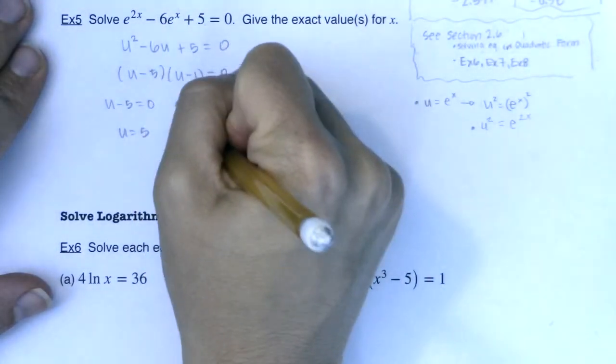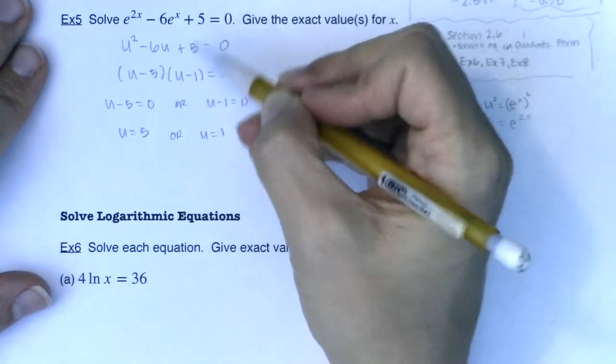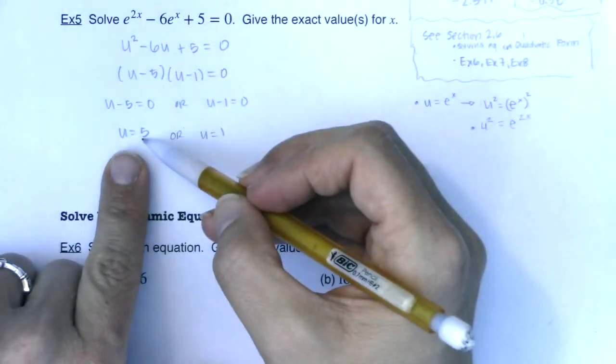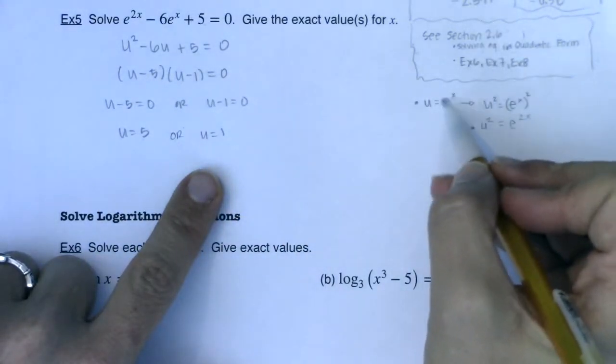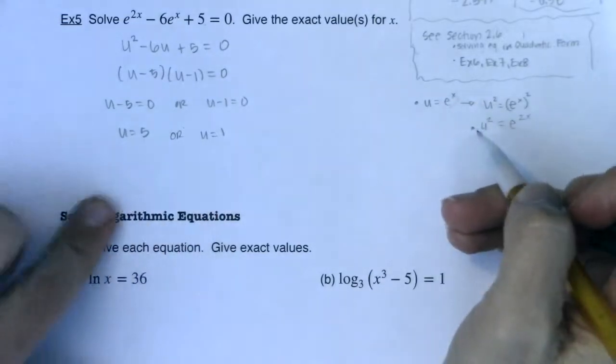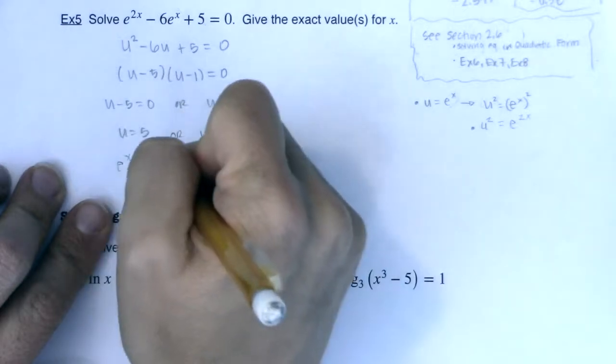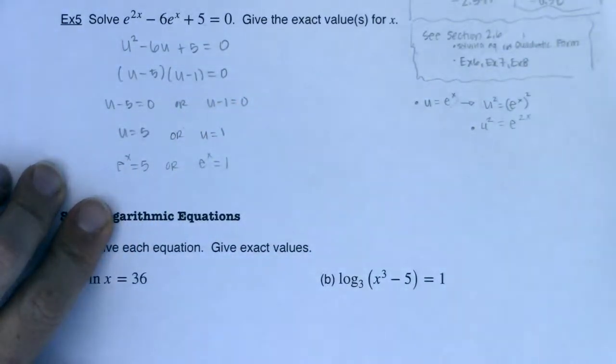And you might be thinking, sweet, I'm done. Eh, you're not. You started the problem in x's, so you need to end the problem in x's. So we need to now sub back. So that's great that u is 5 and u is 1, but what is x equal to? Well, I know u is equal to e to the x, so let me sub back. So here I will get e to the x is equal to 5, or e to the x is equal to 1.